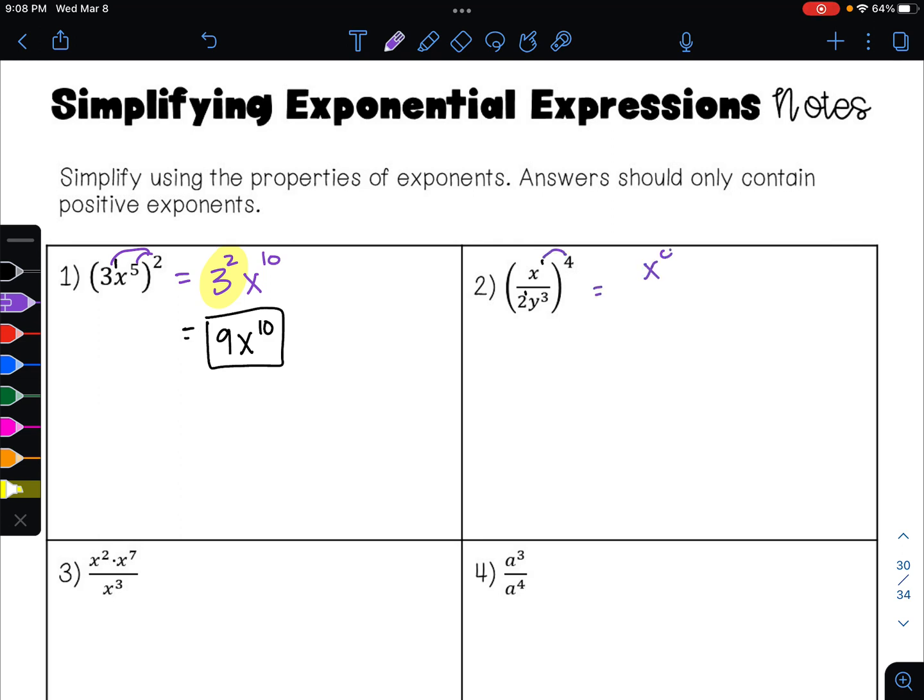So that gives me x to the 4th. 1 times 4 is 4. So it's going to give me 2 to the 4th. And 3 times 4 is 12. So it will give me y to the 12th.